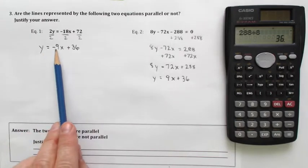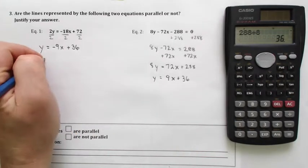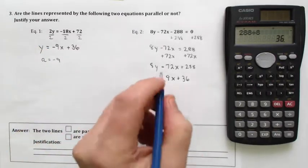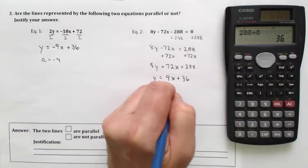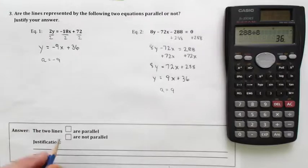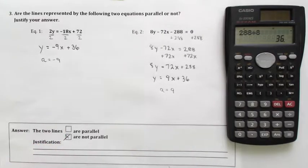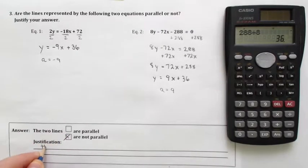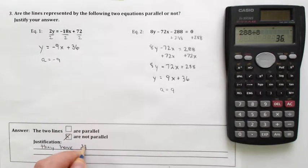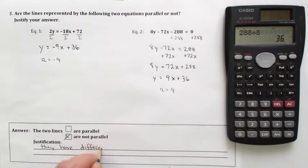And you can see that the a over here is a negative 9, whereas the a over here is 9, positive 9. And those numbers are not the same. A 9 and a negative 9 are not the same number. So these lines are not parallel because they have different slopes.